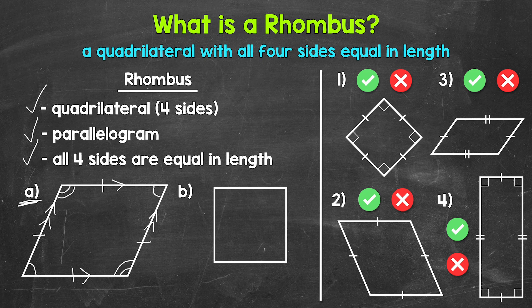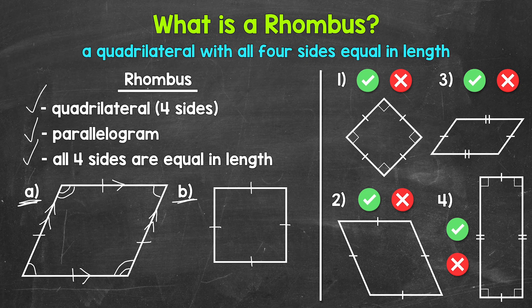Let's move on to example B. Now here, it looks like we have a square. So is this not a rhombus then? Well, we have a quadrilateral with all four sides equal in length. Let's put a tick mark on each side to show that each side is the same length. This is a parallelogram as well — we have two pairs of parallel sides. So yes, this is actually, technically, a rhombus.